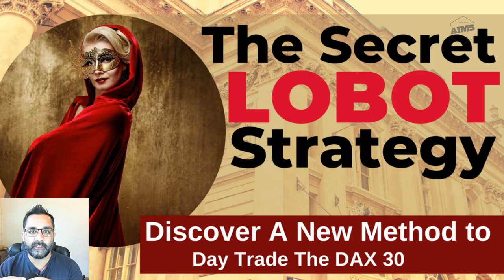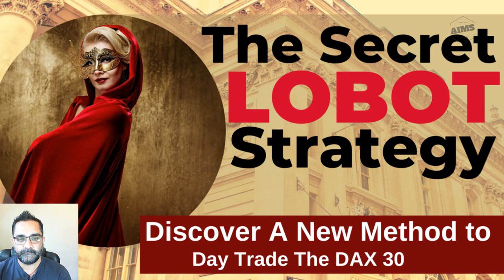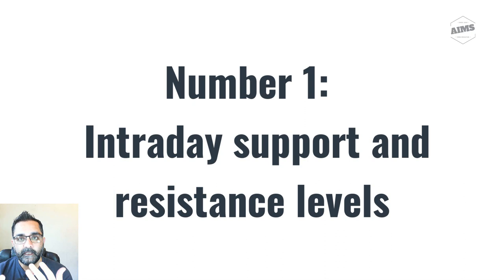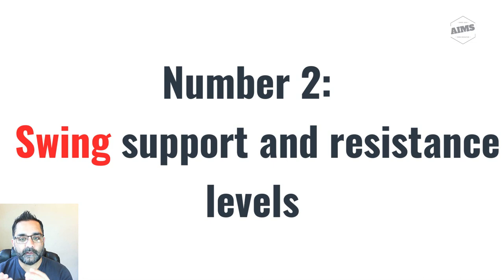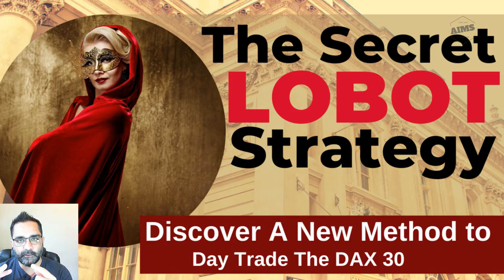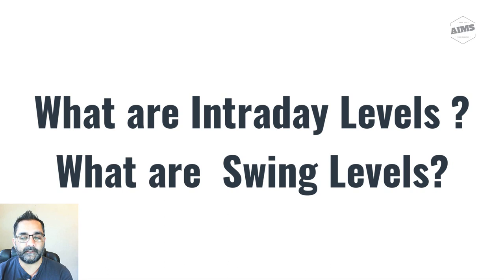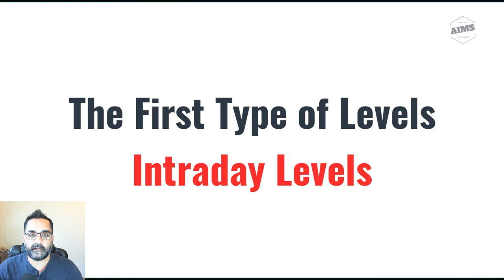Levels to the left are support and resistance levels, but at AIMS we use support and resistance slightly differently — we give more importance to box highs and lows, which are fractal highs and lows based on five candles. There are two types of support and resistance levels useful for day trading indices. Number one: intraday support and resistance levels. Number two: swing support and resistance levels. Understanding these two types clarifies which levels you should be looking at.